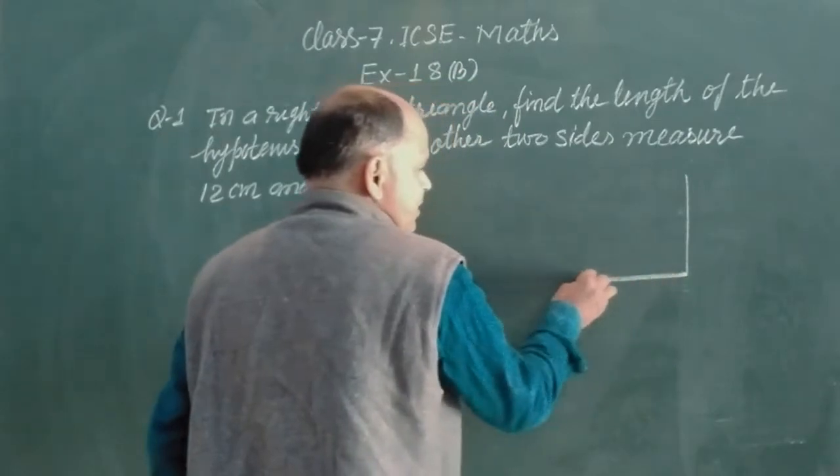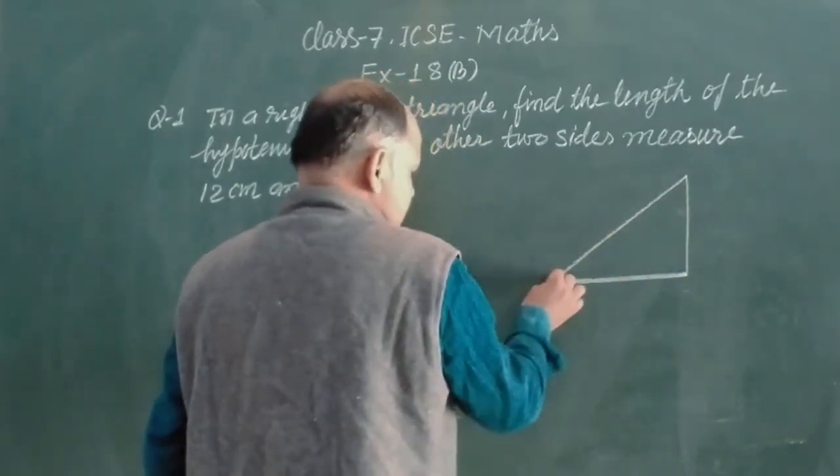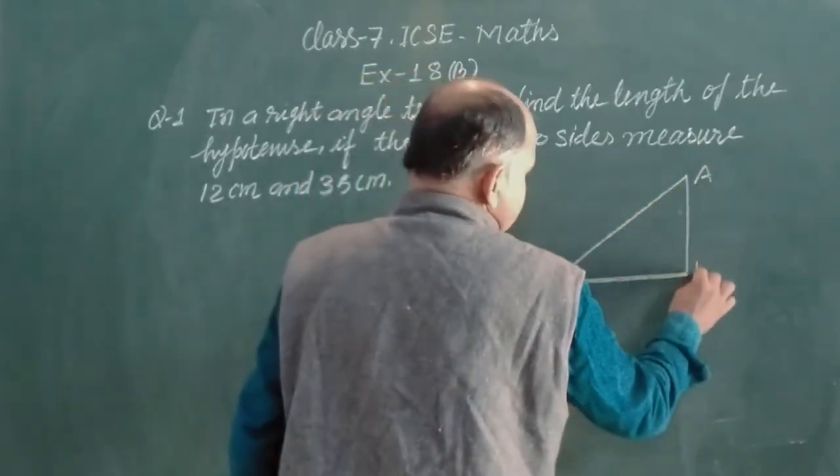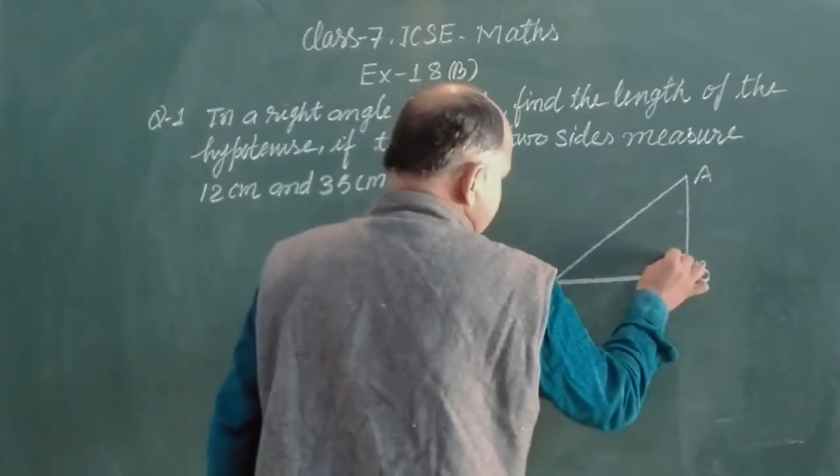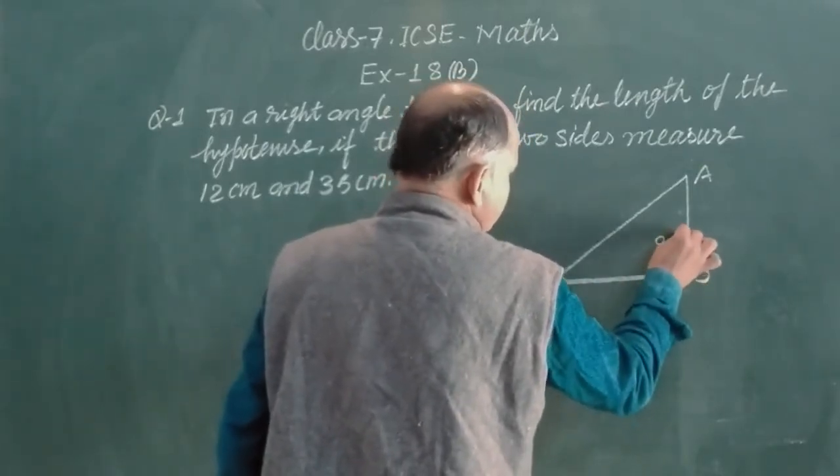So student, first we make a right angle triangle which is A, B, C with right angle at B.